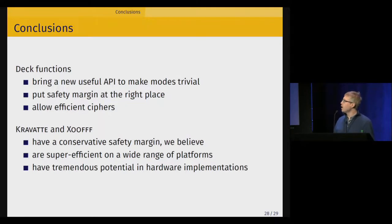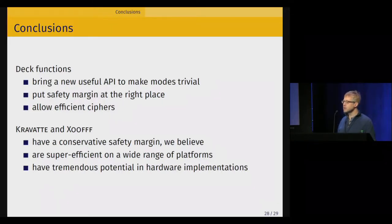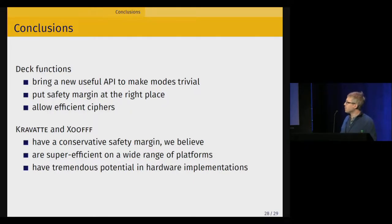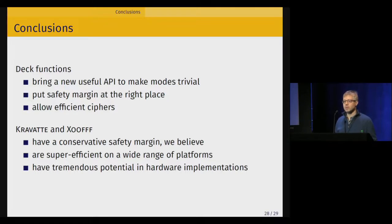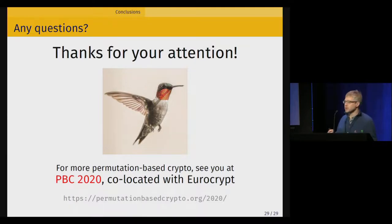To conclude: we presented a way to refactor symmetric crypto, at least for keyed operations, by proposing a new API called the DECK function. This puts the safety margin at the right place, allowing us to build things that are quite efficient. We showed the performance of Kravatte and Xoofff as showcases, and we believe both have conservative safety margins. Besides good software performance, they have high potential for hardware implementations. If you are interested in permutation-based crypto, we are organizing a workshop co-located with Eurocrypt on permutation-based crypto. Thank you very much.